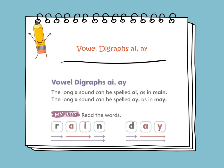Vowel digraphs A-I and A-Y. The long A sound can be spelled A-I as in main. The long A sound can also be spelled A-Y as in may. So let's read the words here. A-I and A-Y make a long A sound. We have rain and day. Whenever you see the digraphs A-I or A-Y, they have a long A sound.